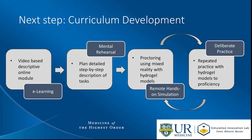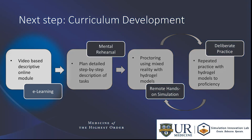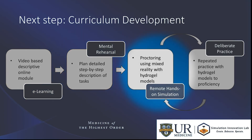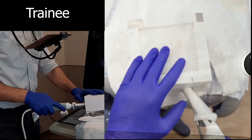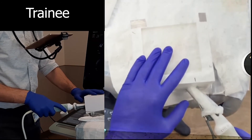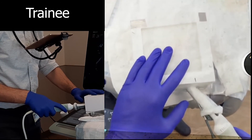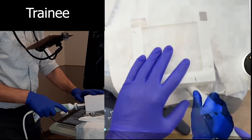Moving forward, we plan to utilize this model in a virtual learning curriculum for resident education. The curriculum will consist of four stages: an e-learning phase where participants review material about the procedure, a mental rehearsal phase where participants write down and plan their approaches, a remote hands-on simulation phase with guided simulation, and a deliberate practice phase where participants complete the simulation independently. The portable and non-biohazardous nature of the model makes it ideal for use with merged reality software, which allows the instructor to teach remotely by superimposing their hand movements on the trainee's view to aid in procedural training.